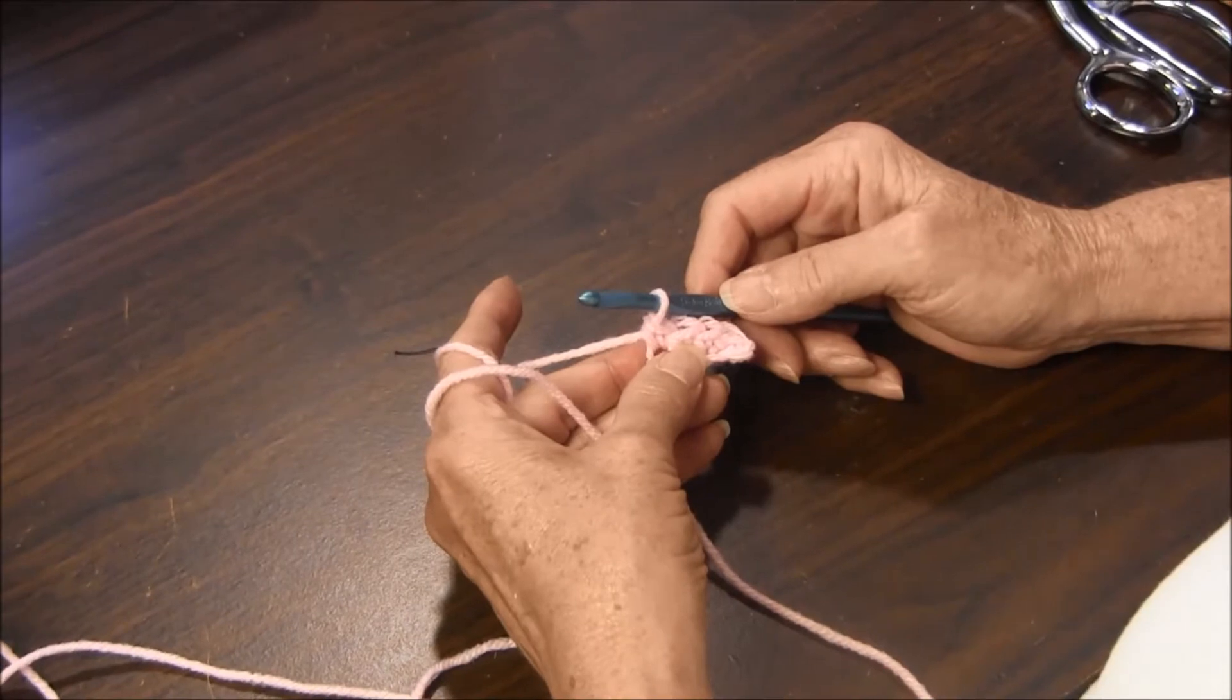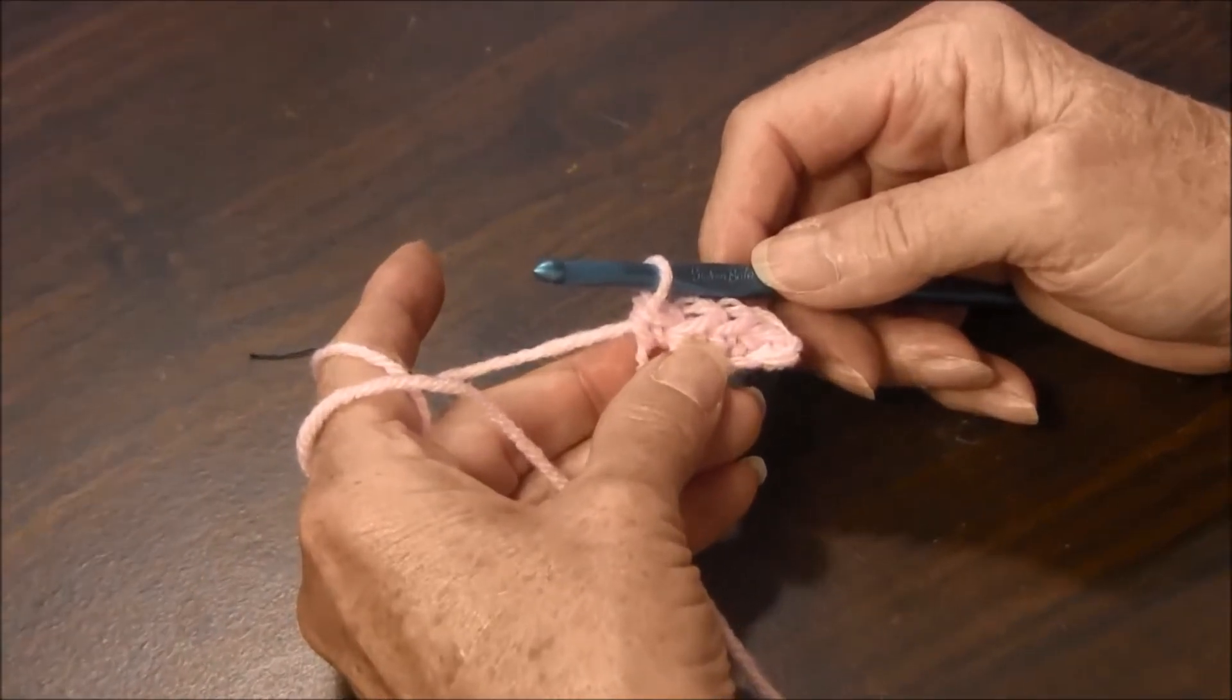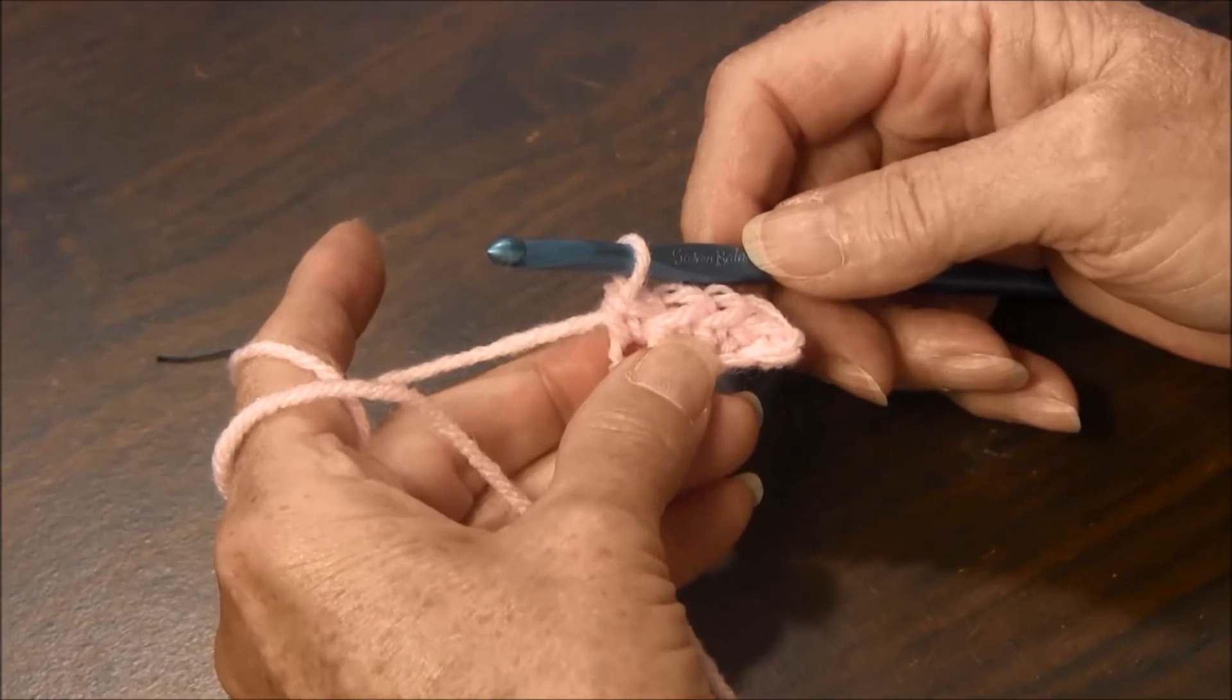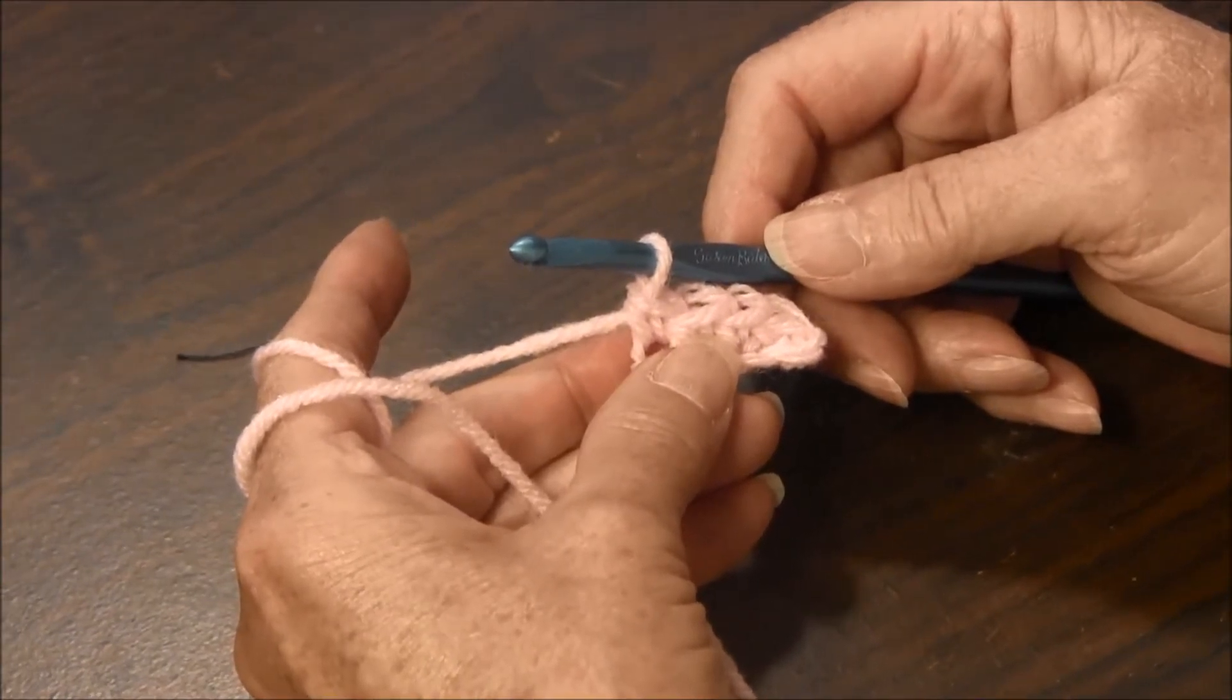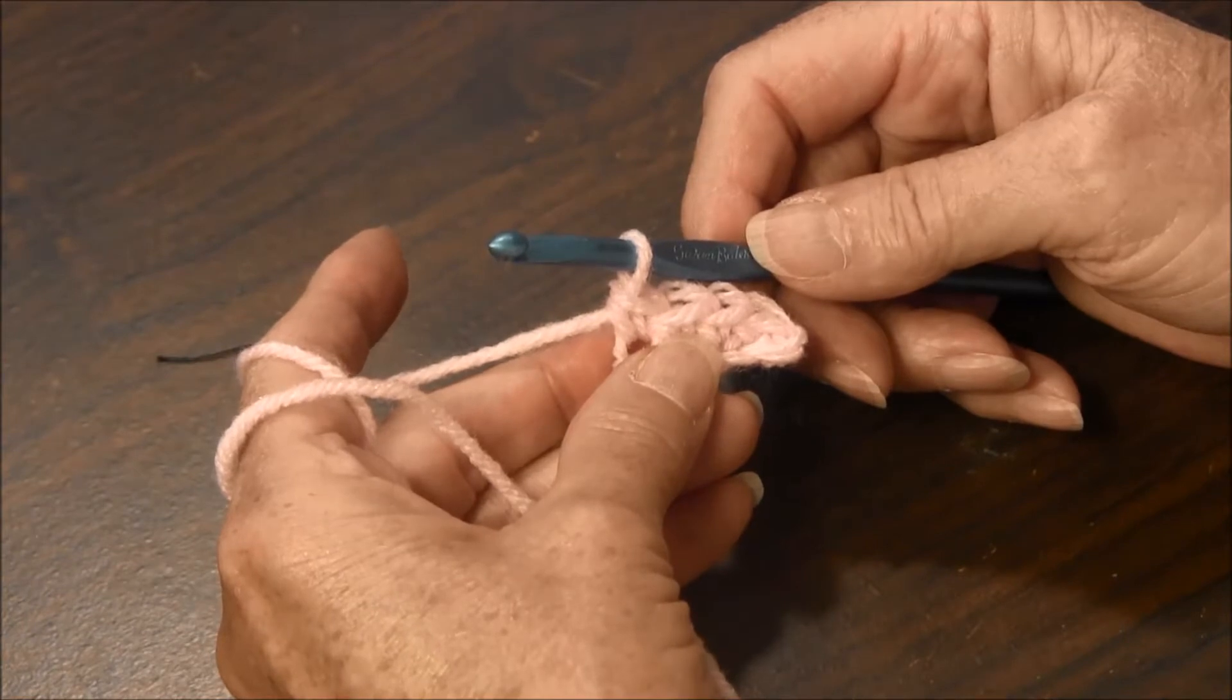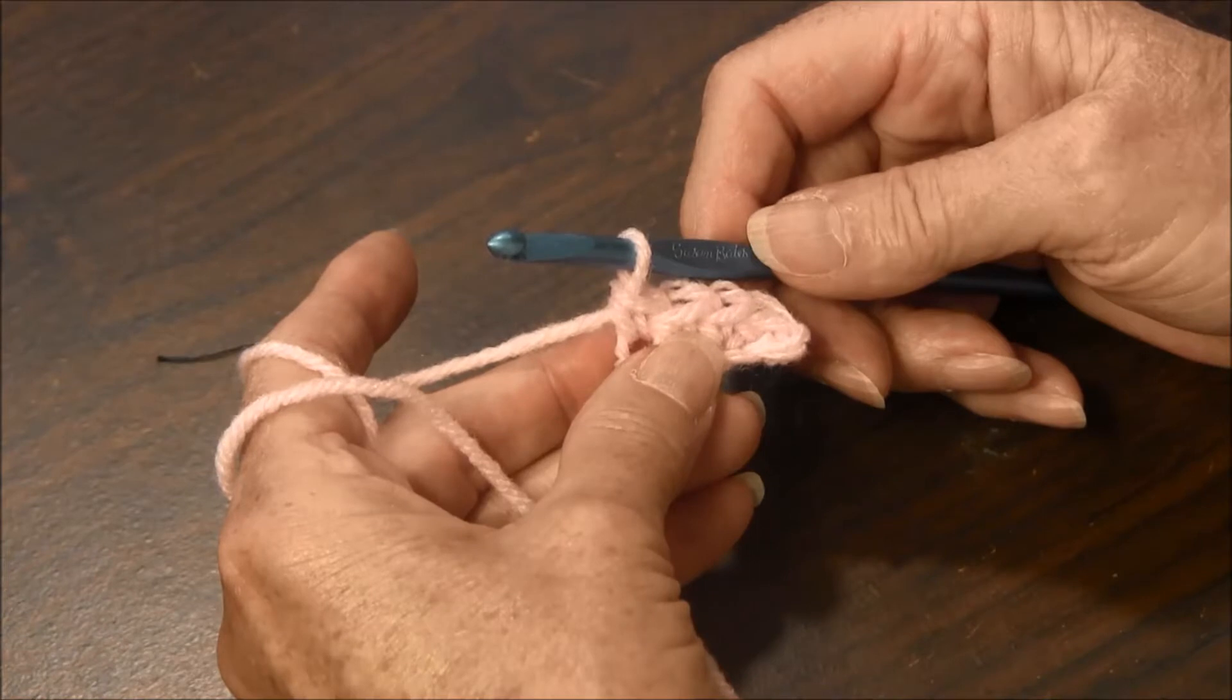This tutorial by NeedlePointers.com will explain and show how to crochet a turning chain when single crocheting. The trick to making turning chains is to make the proper number of chains and start the new row in the correct stitch.